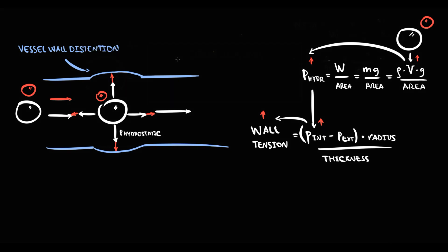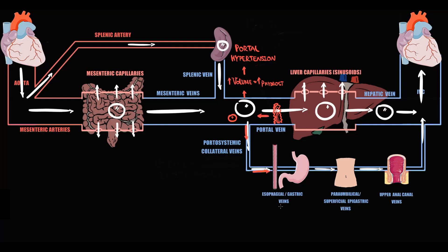Distension of esophageal veins and gastric veins causes formation of esophageal varices and gastric varices. Distension of paraumbilical and superficial epigastric veins causes formation of caput medusae on the anterior abdominal wall. And distension of upper anal canal veins causes formation of hemorrhoids.